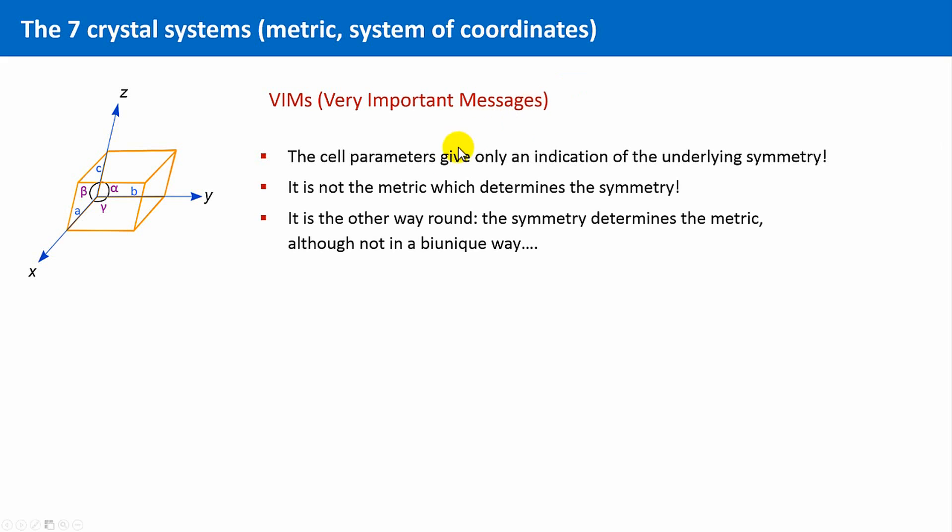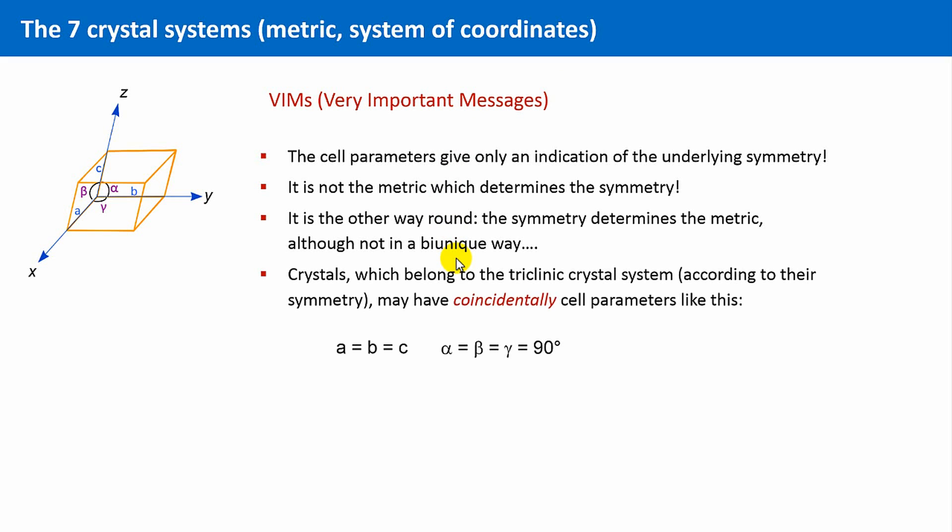The mathematic experts among us would say not in a bi-unic way. Crystals, which belong to the triclinic crystal system according to their symmetry, may have coincidentally cell parameters like this. A equals B equals C, and alpha equals beta equals gamma, and all are 90 degrees.